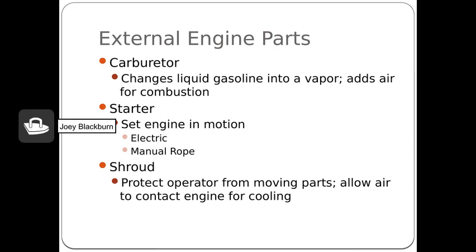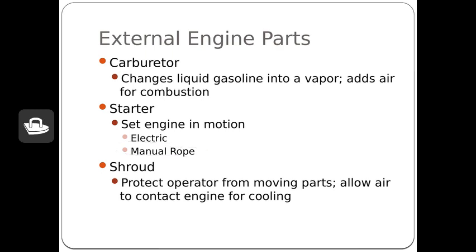A few more big external components: the carburetor — we'll spend a lot of time on this in another module — briefly its job is to mix air and fuel and get them to the combustion chamber. There's some sort of starter; in small engine situations we often think about the manual rope or recoil starter, but we can also have electric starts, especially on riding lawnmowers and zero-turns, and even on some higher-priced small generators. Then all of them have some sort of shroud, which keeps hands, feet, and anything else away from the fast-moving parts, and also allows air to contact the engine for cooling. It's a good idea to take the shroud off and clean out old grass clippings, mud dauber nests, and anything else that could lead to engine overheating.